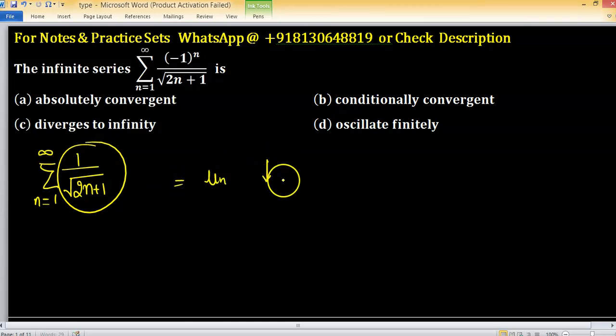un is decreasing and going to 0. According to Leibniz test, the original series is convergent.